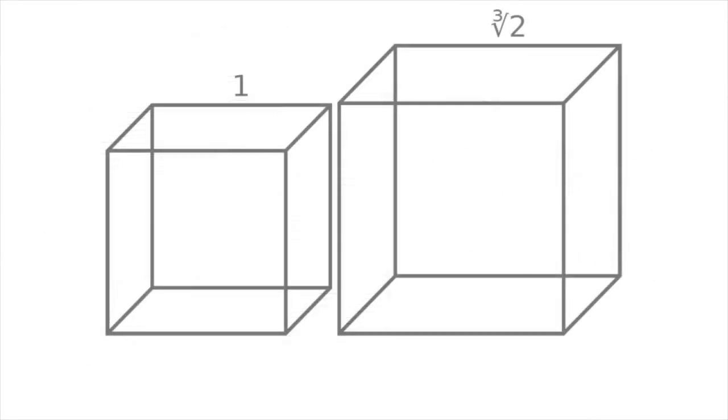The third of the classic construction problems was duplicating the cube. Given a cube, is it possible, with a straight edge and compass only, to make a cube with twice the volume? Again, the Greeks found that it was possible with a marked ruler, but not otherwise.